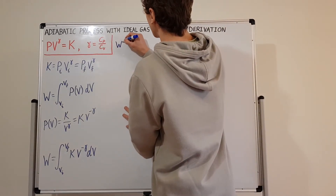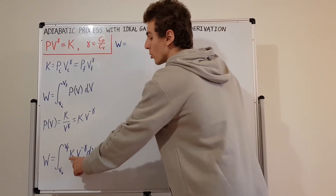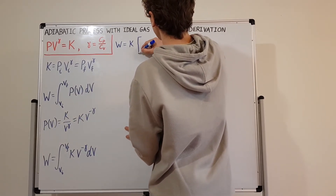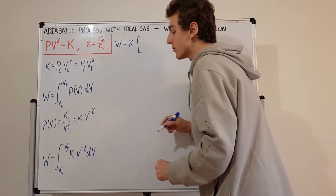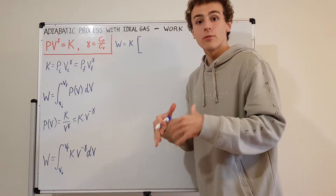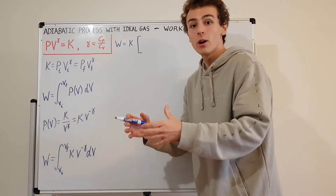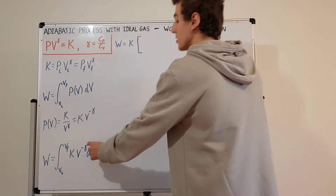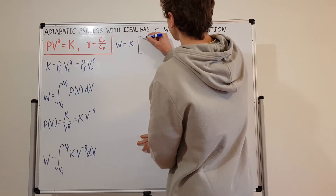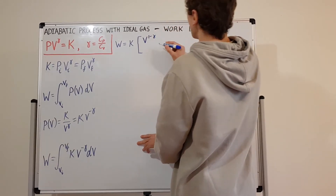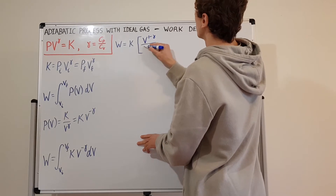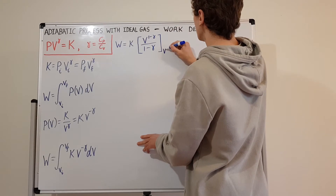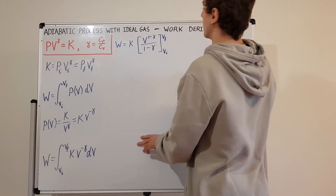The work is going to be equal to — first I'll pull the constant K out. We're going to use the power rule: the integral of x^n is x^(n+1) divided by (n+1). So we add 1 to the exponent, giving V to the (1 minus gamma), and divide by that exponent, which is (1 minus gamma). We evaluate that from V-initial to V-final.